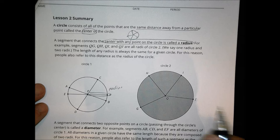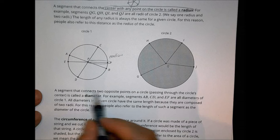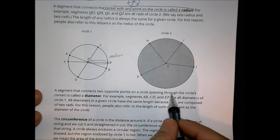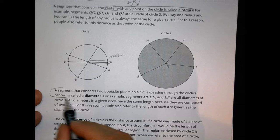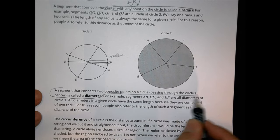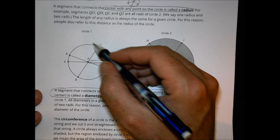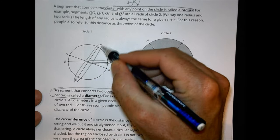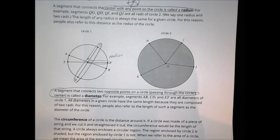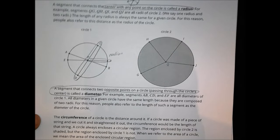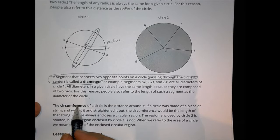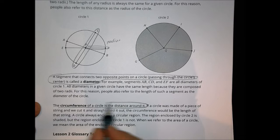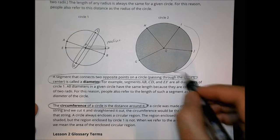So the radius could be from point P to point F — that segment is considered a radius. A segment that connects two opposite points on a circle passing through the circle's center is called a diameter. So if it goes through the center and connects two points straight across, like C to D through the center, that's the diameter.